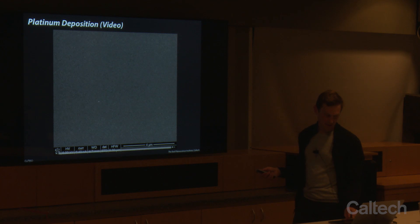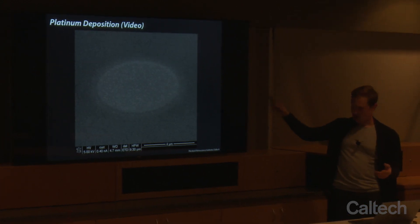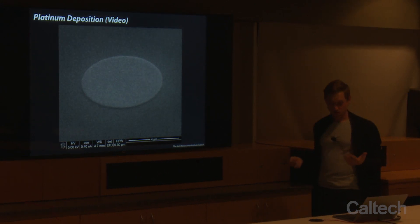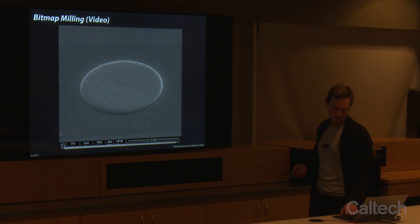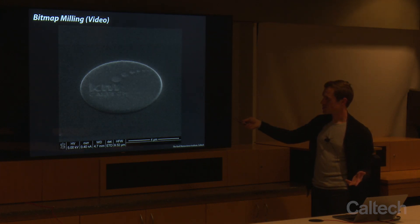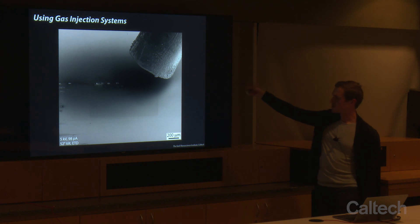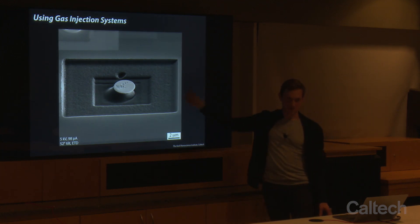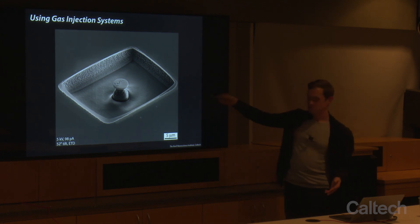Now that we've talked about all these concepts, this comes back around to how we can deposit platinum — what's effectively plasma-enhanced chemical vapor deposition of metal. We saw the making of our Caltech logo with the platinum deposition, and then the xenon difluoride etching. The gas injection needle is just a couple hundred microns above the sample surface, so there's directionality related to the gas contacting the sample. If you rotate the sample a couple of times back and forth, you can get an effectively radially symmetric pillar.